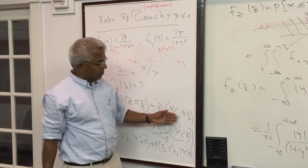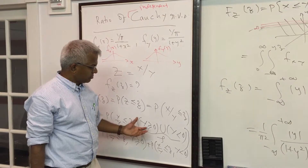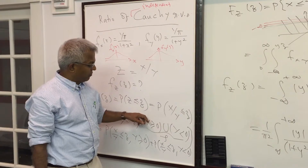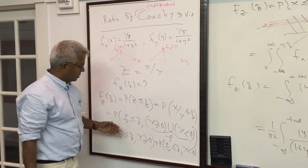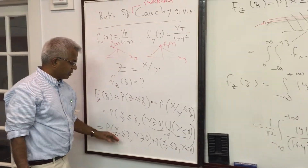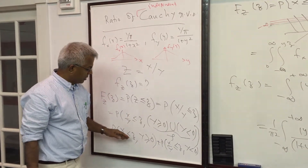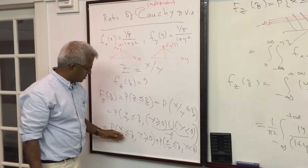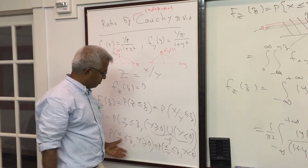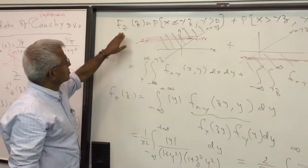The problem is that we cannot simply bring Y across the inequality because Y could be positive or negative. So we partition the whole space as the disjoint union of Y positive and Y negative. Because this is a mutually exclusive union, we can write the probability as a sum of two terms.